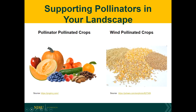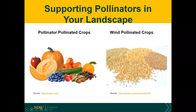Honeybees are vital to our agriculture industry and economy, pollinating a variety of popular crops. Cereal grains — wheat, corn, and rice — which make up the largest part of the world diet, don't need pollinators because they are wind-pollinated. Soybeans are also wind-pollinated crops.